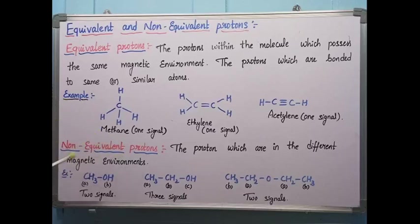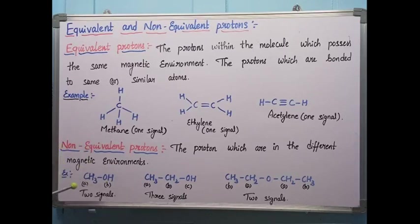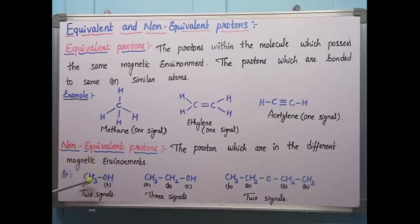Non-equivalent protons are protons in different magnetic environments — they are chemically unequivalent and absorb radiation at different magnetic strengths. For example, in CH3OH, the three protons bonded to carbon give one signal, and the one proton bonded to oxygen gives another signal, producing two different signals. This is because carbon and oxygen have different electronegativities, causing shielding and deshielding effects.